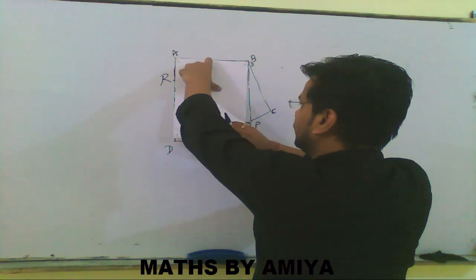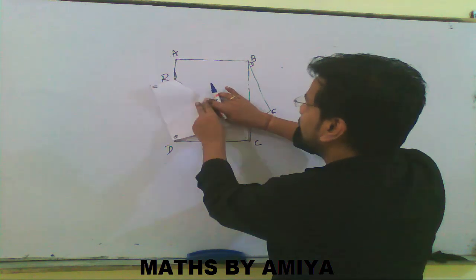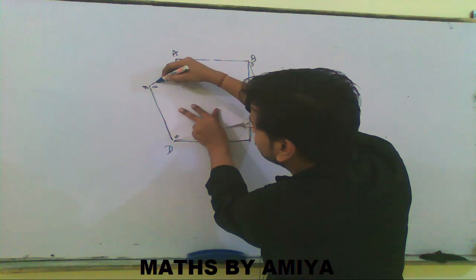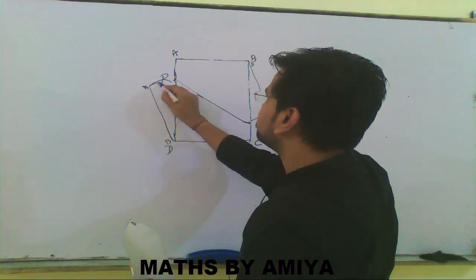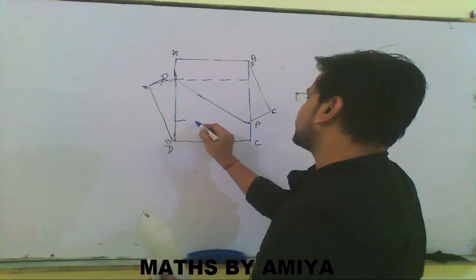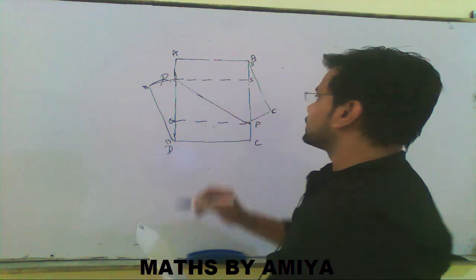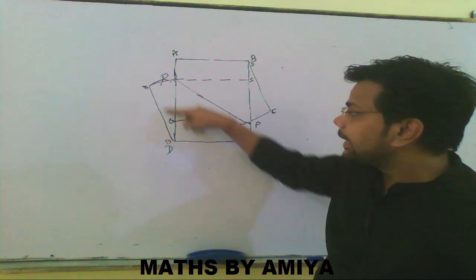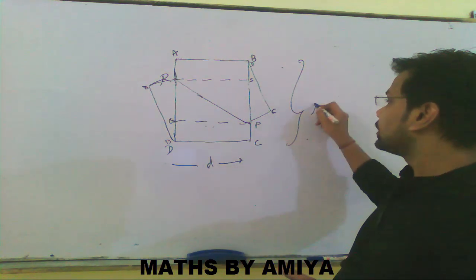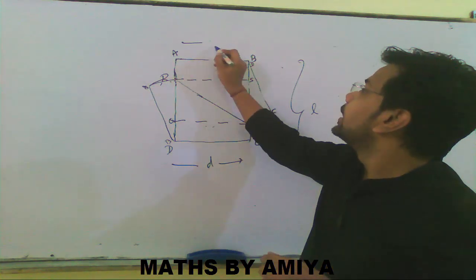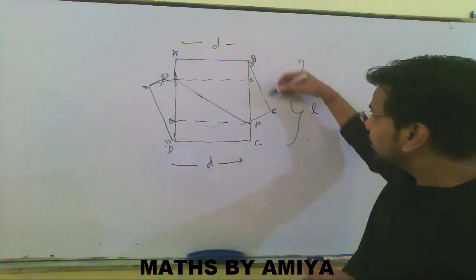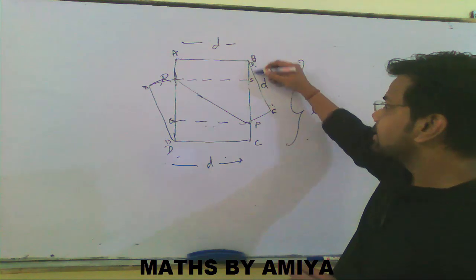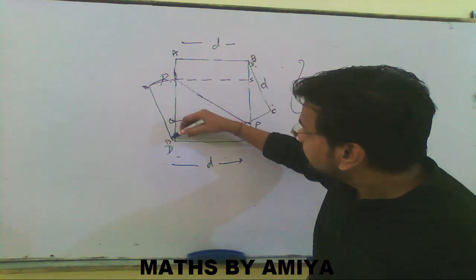Now if we fold paper so that D goes to B: this is the BA line, this is the bend, and this is B. We draw a straight line and name the points Q, R, and S. Point D comes here and point B comes here — that length is AB. Our complete length was l and DC = d, so AB = d. The length from D to C is d as well, so this length is d and AB is also d.